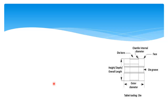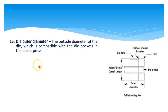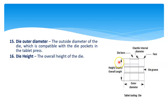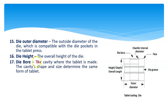Now there are some definitions about dies. First, die outer diameter — this is the outer diameter of the die, the outside diameter of the die which is compatible with the die pocket in the tablet press. Then die height — this is the height, depth, or overall length of the die, that is called die height. Then die bore — this is the die bore, that is the inner diameter of the die, the cavity where the tablet is made. The cavity shape and size determine the form of the tablet.